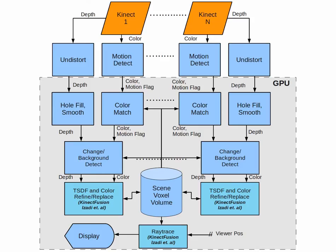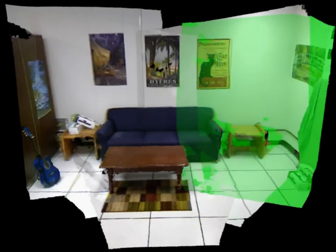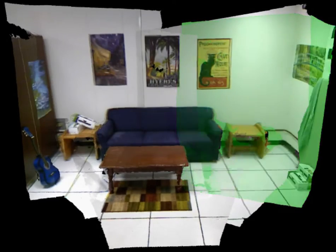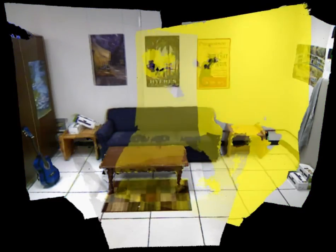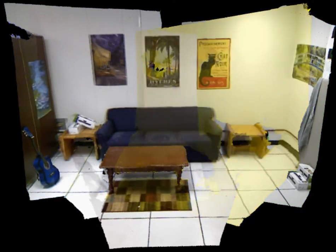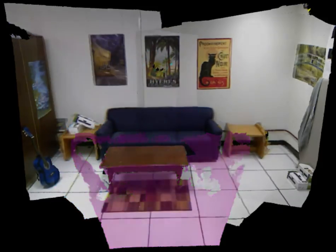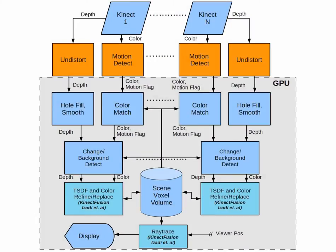We start with the color and depth images from an array of 5 Kinect depth cameras. The contribution of each camera in the scene is shown here. The distortions and biases in the depth data are corrected, and motion is detected in the color images for use in later processing.